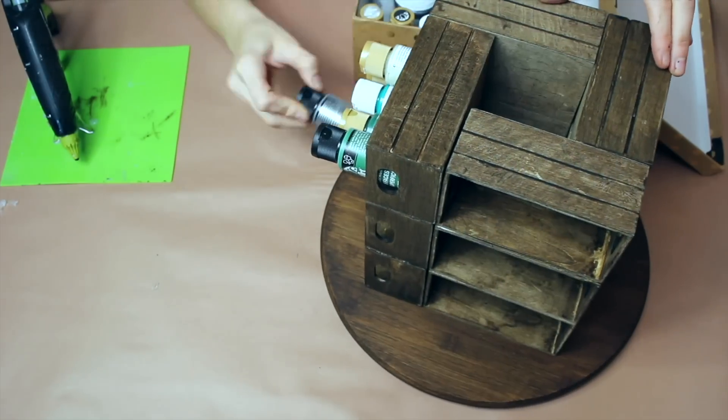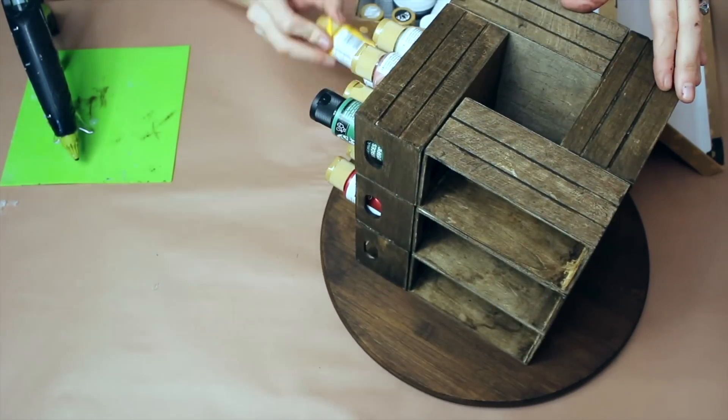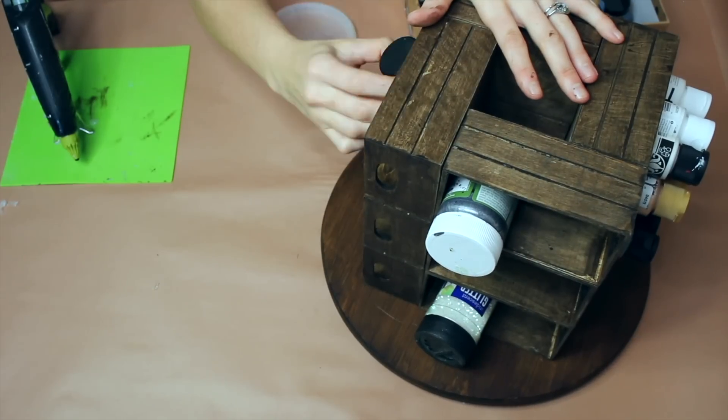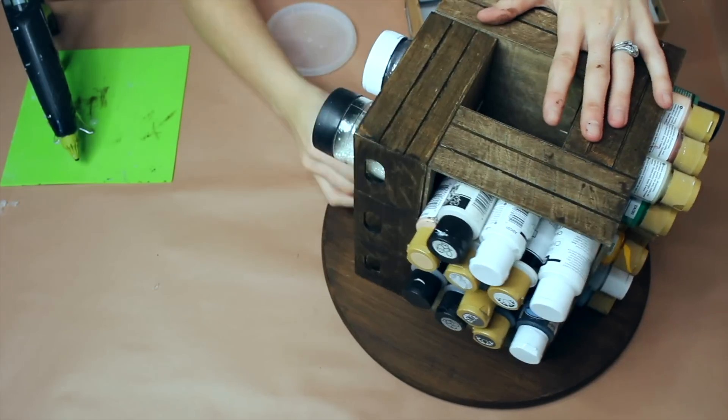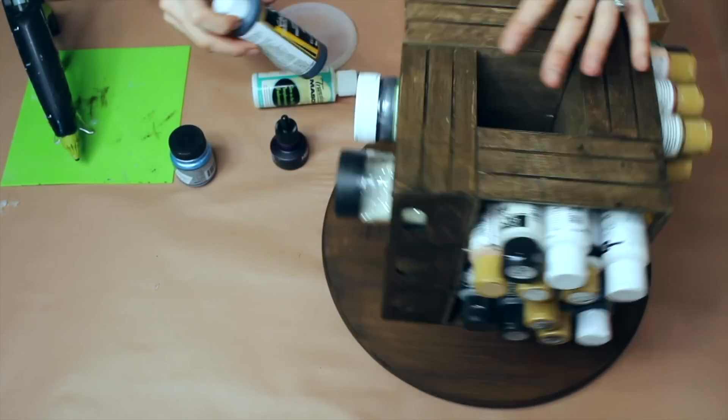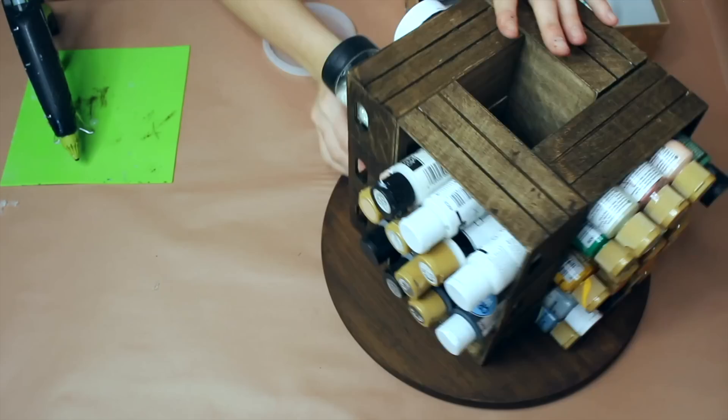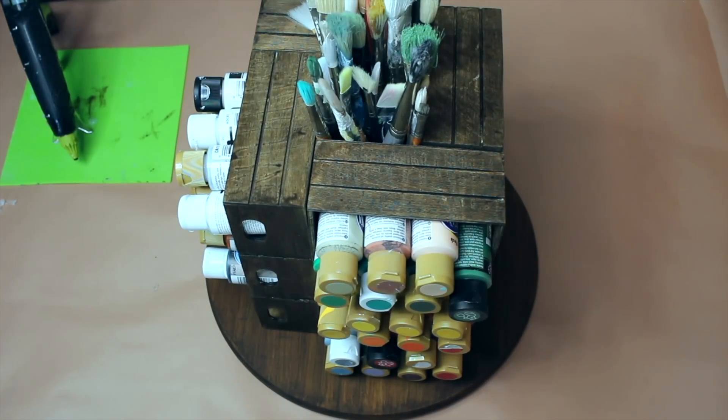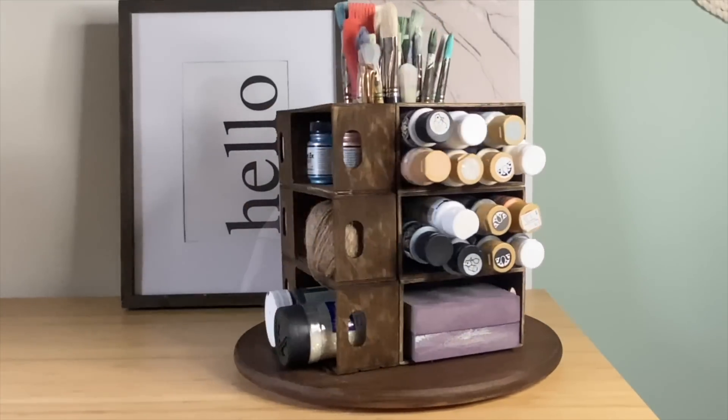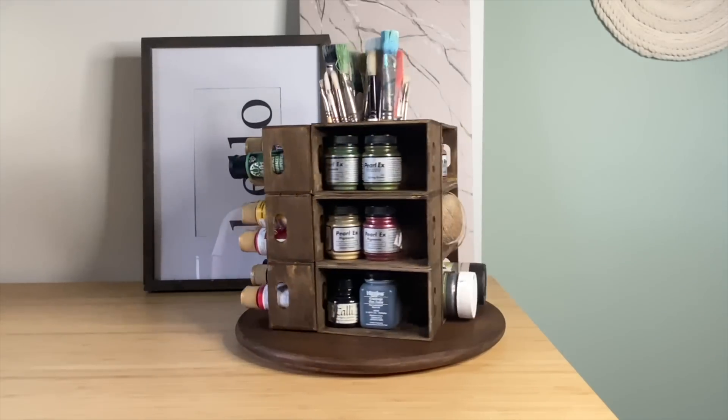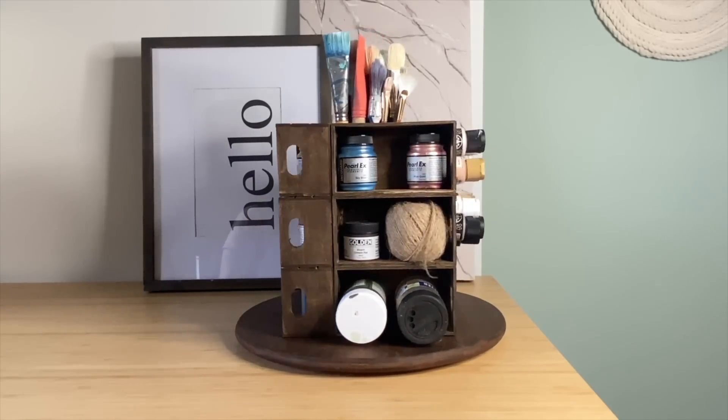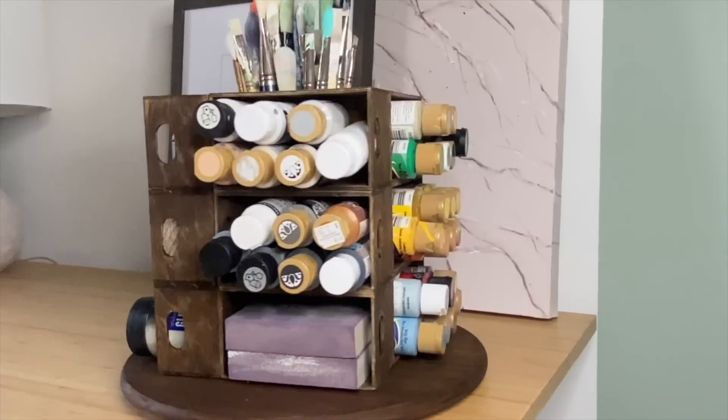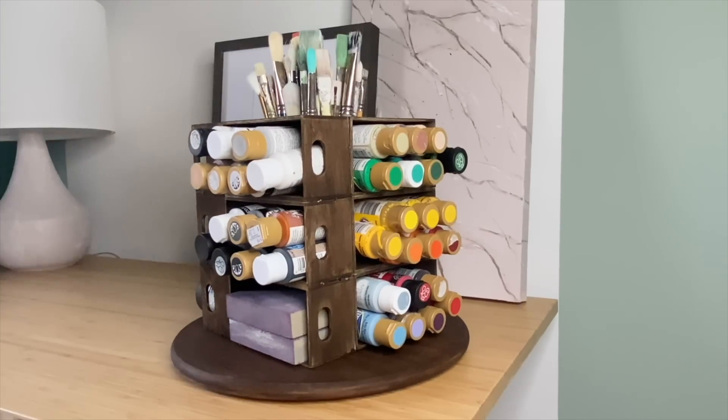And now what you have is a really inexpensive way to store some paint and other art supplies. So we're going to go ahead and load this up with paint and brushes and all of that so you can see essentially how it's going to work. And here's the finished product. I'm really loving this DIY Dollar Tree craft room organizer. I love the fact that it is able to spin and hold so much paint and my long artist brushes. So what do you think of this project?